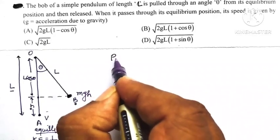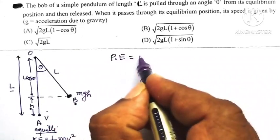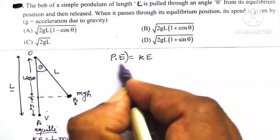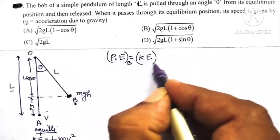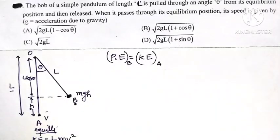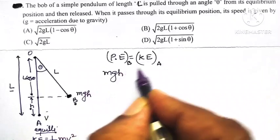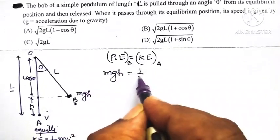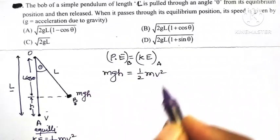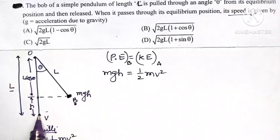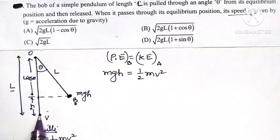Potential energy at point B equals kinetic energy at point A. Potential energy is mgh, and kinetic energy is half mv squared, where v is the speed when the bob passes through its mean position.